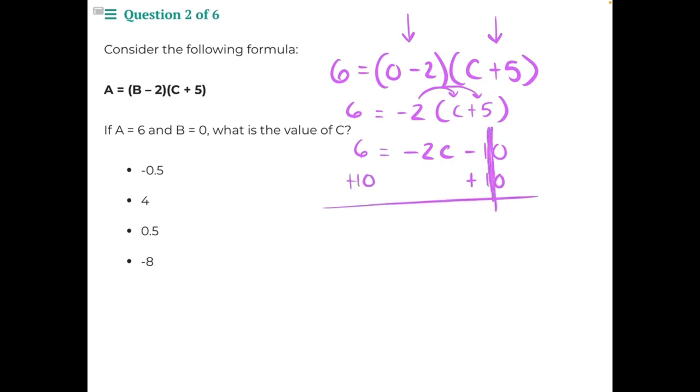These two 10s will cancel out. 6 plus 10 will give us 16 equals, bring down the rest of our numbers, negative 2C.